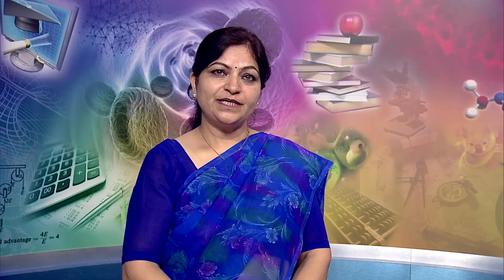According to the Harrod's Librarians' Glossary of Terms, a special library is defined as a collection of books and other printed, graphic or recorded material dealing with a limited field of knowledge, provided by a learned society, research organization, industrial or commercial undertaking, government department, or educational institution. It may also be a special branch of a public library serving certain interests or occupational groups, such as a technical library or a special subject library meeting the needs of all inquiries on a given subject, such as a music library.